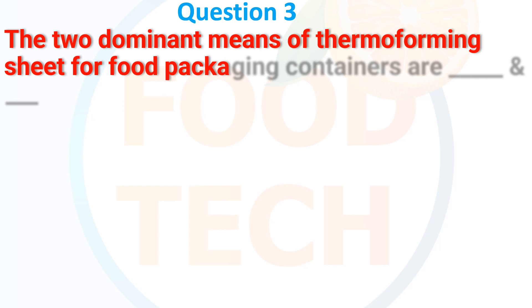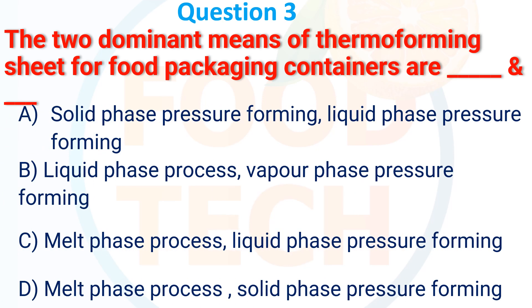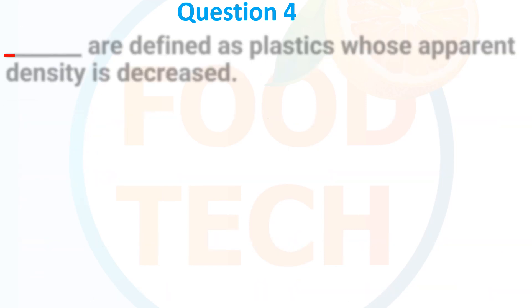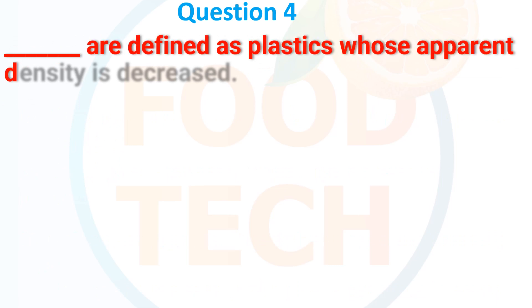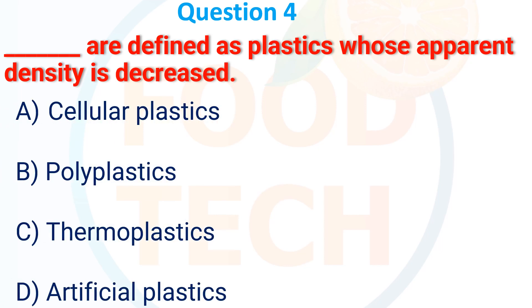The two dominant thermoforming sheet types for food packaging containers are dash and dash. (a) Solid phase & Pressure forming / Liquid phase pressure forming, (b) Liquid phase & Vapor phase pressure forming, (c) Metal phase & Liquid phase pressure forming, (d) Melt phase process & Solid phase pressure forming. The answer is (d) Melt phase process & Solid phase pressure forming.